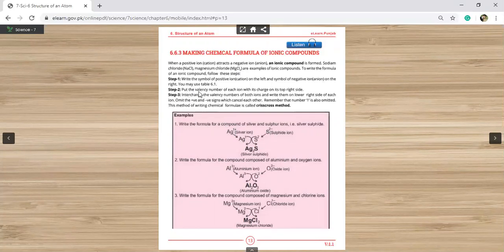In step 2, we will put the valency number of each ion with its charge on its top right side. Ag is one plus so this means that it can give one electron. S is negative so this means that these two electrons gain. Interchange the valency number of both ions and write them on lower right side of each ion, omitting the positive and negative signs.